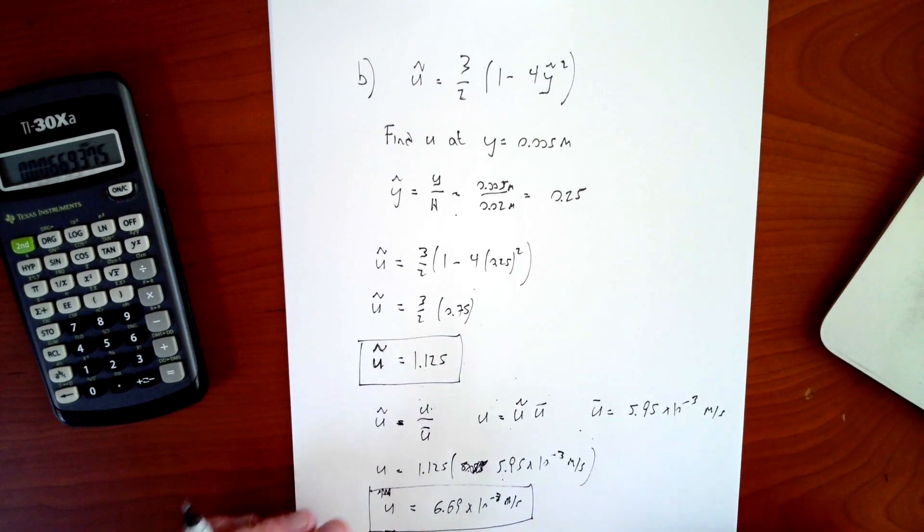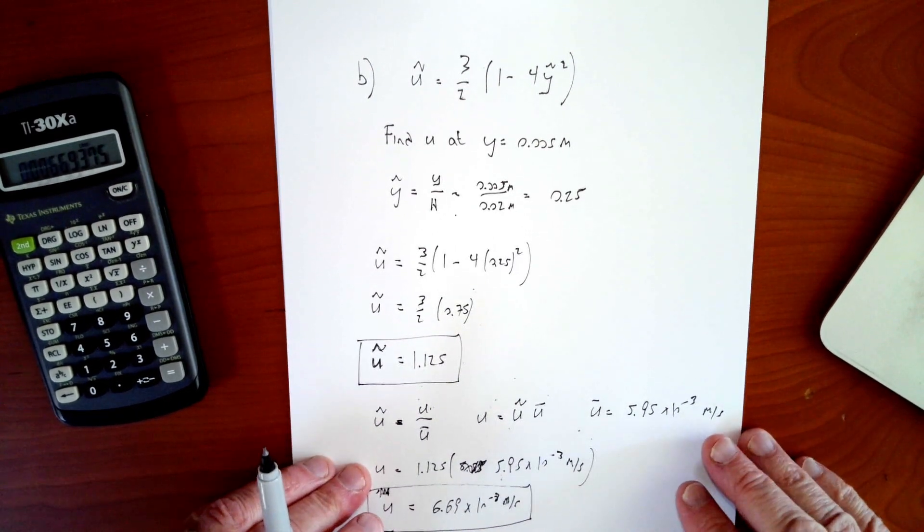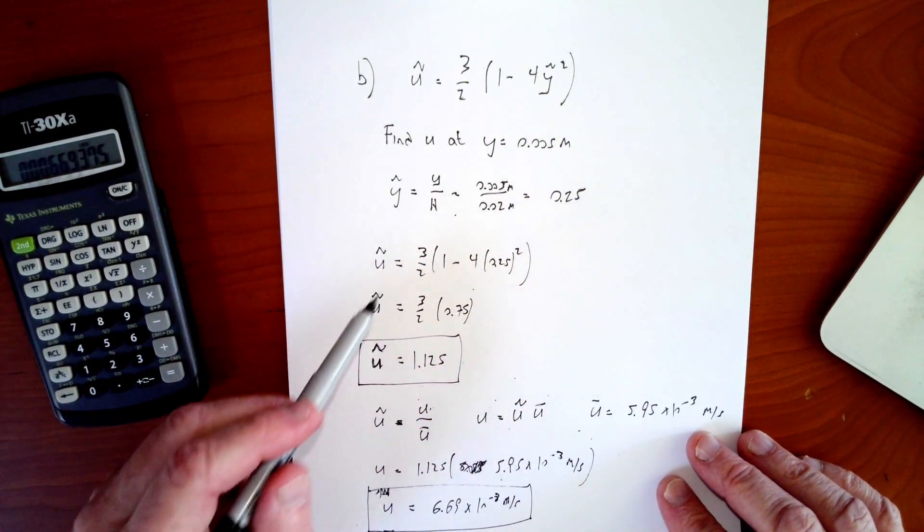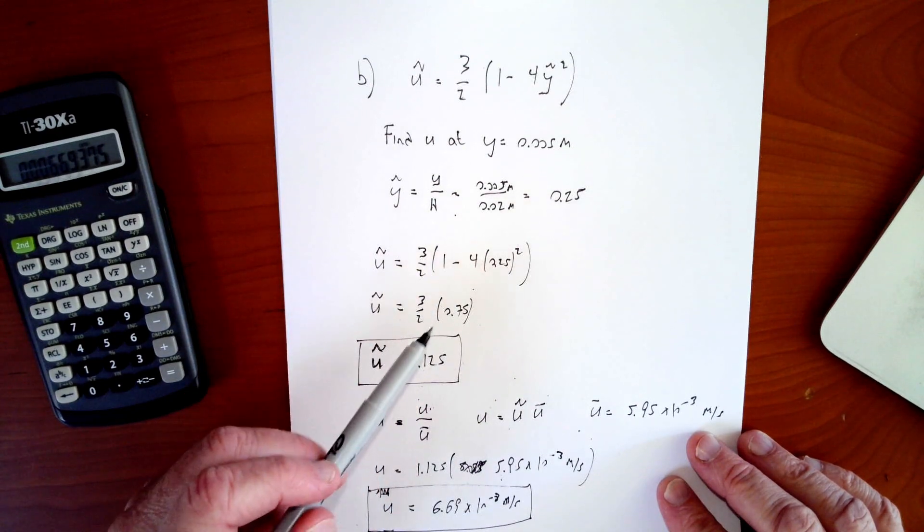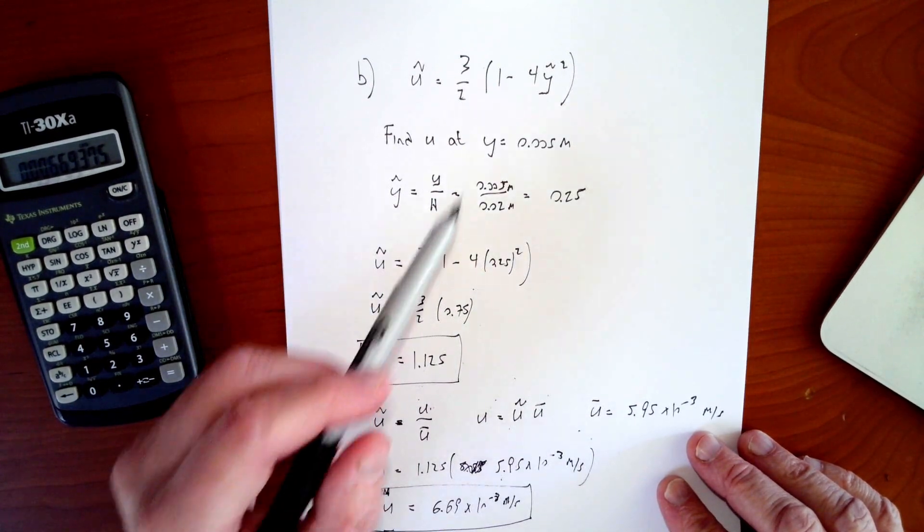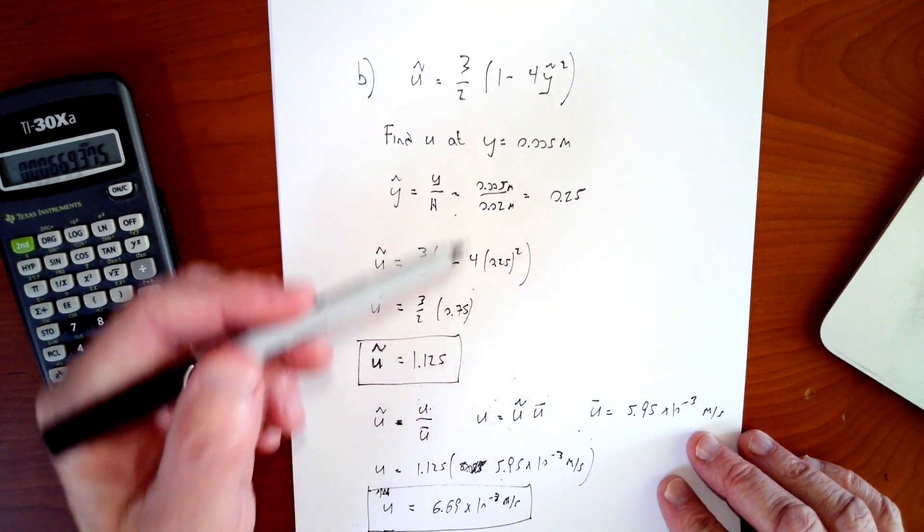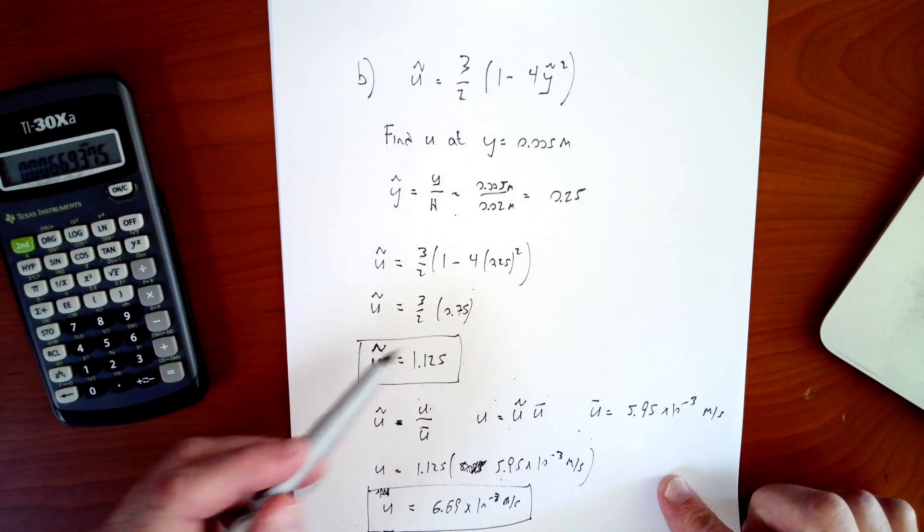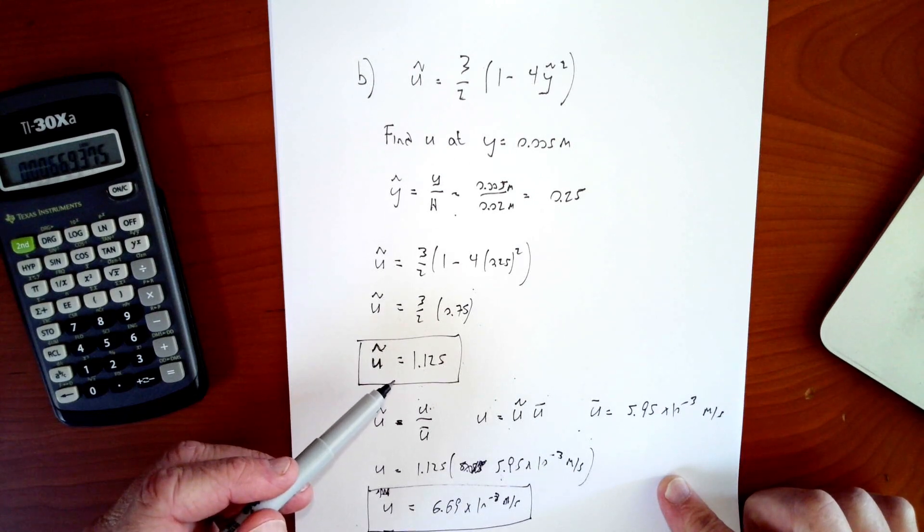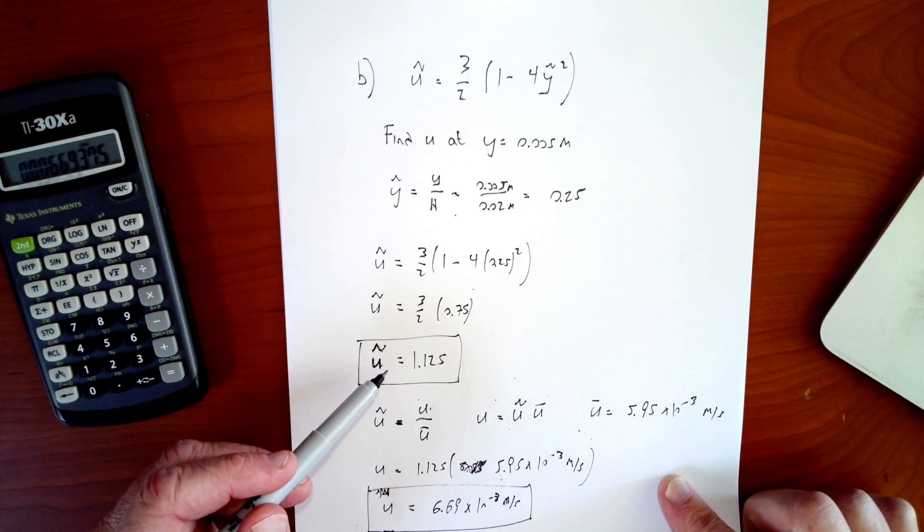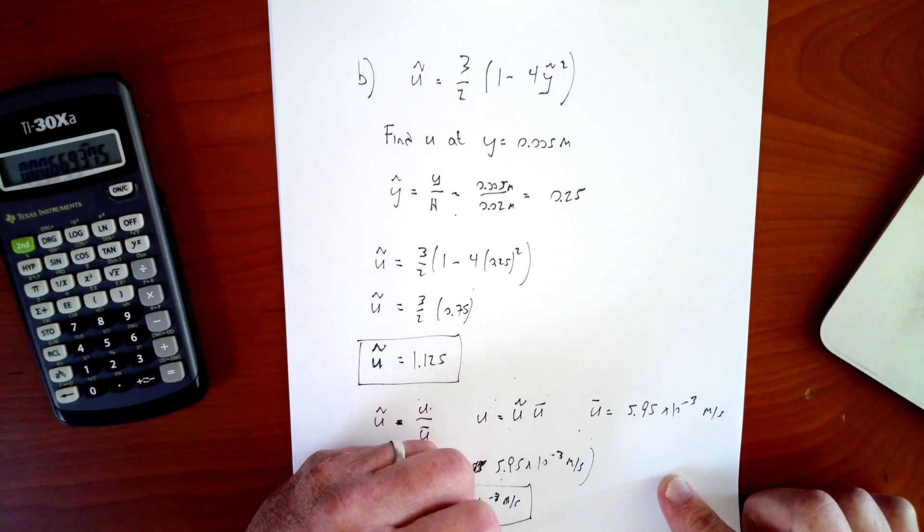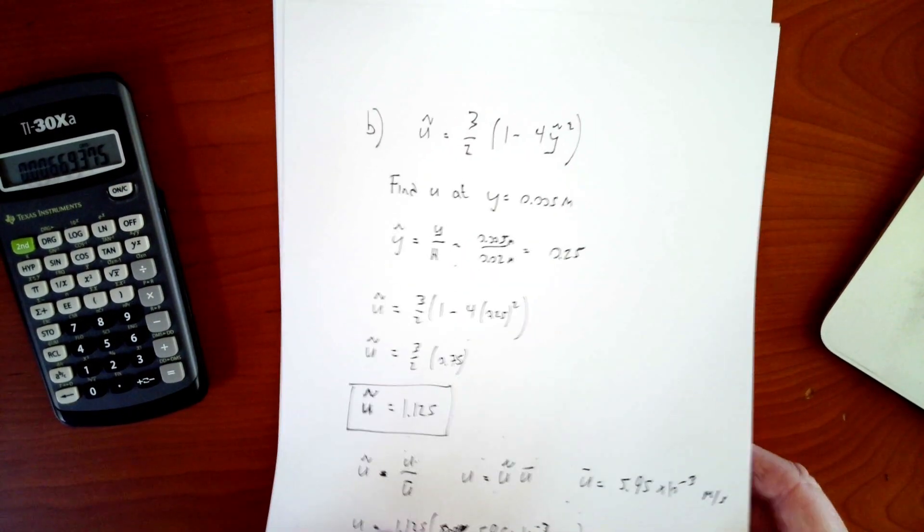That's one of the, you start to see why dimensionless analysis can be sort of nice. This relationship is true for all flows that are at, when you're looking at the flow that's at halfway between the top and the midpoint of the plate flow between a plate, this is always true. So all you need to do to solve for different flows is plug in your different average velocities and you get the solution very quickly. All right. So there's that.